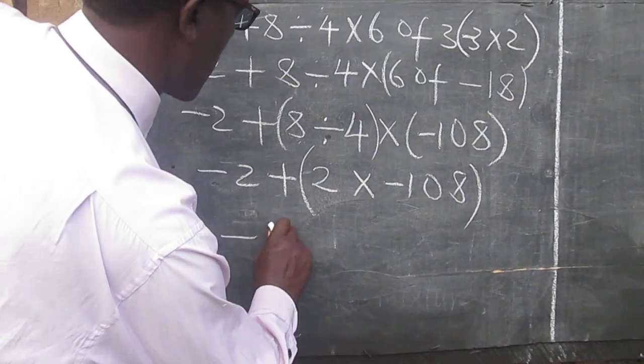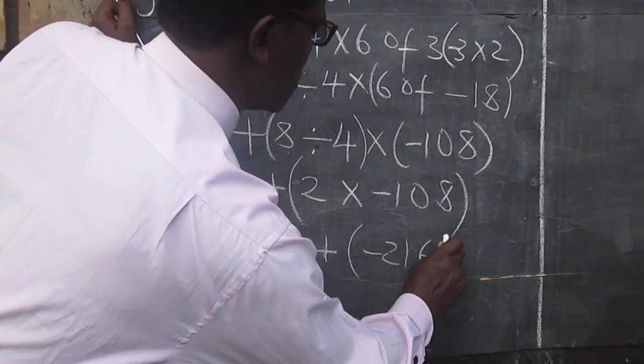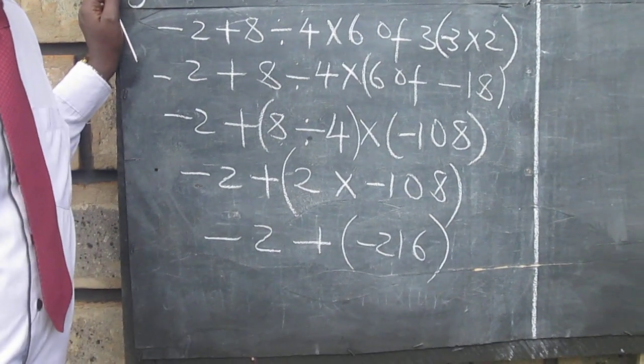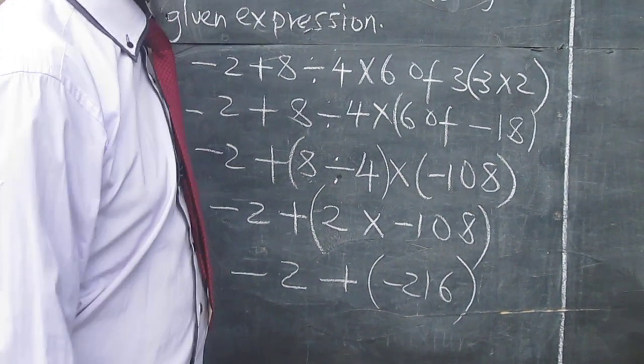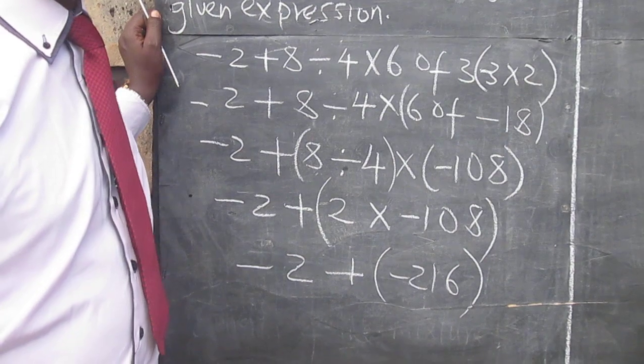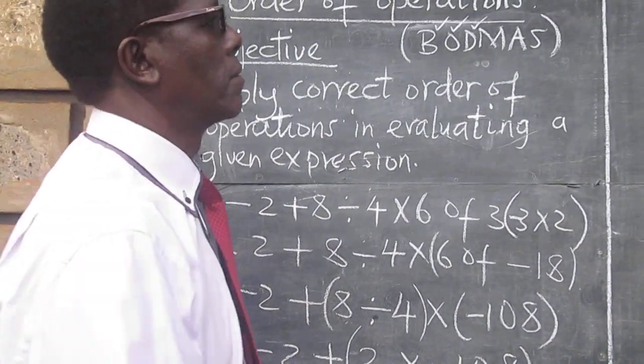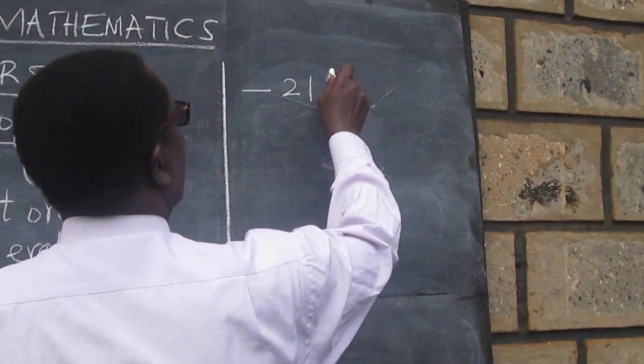Therefore, which means that we are adding negative 216 to the negative 2, so that we get the final answer as negative 218.